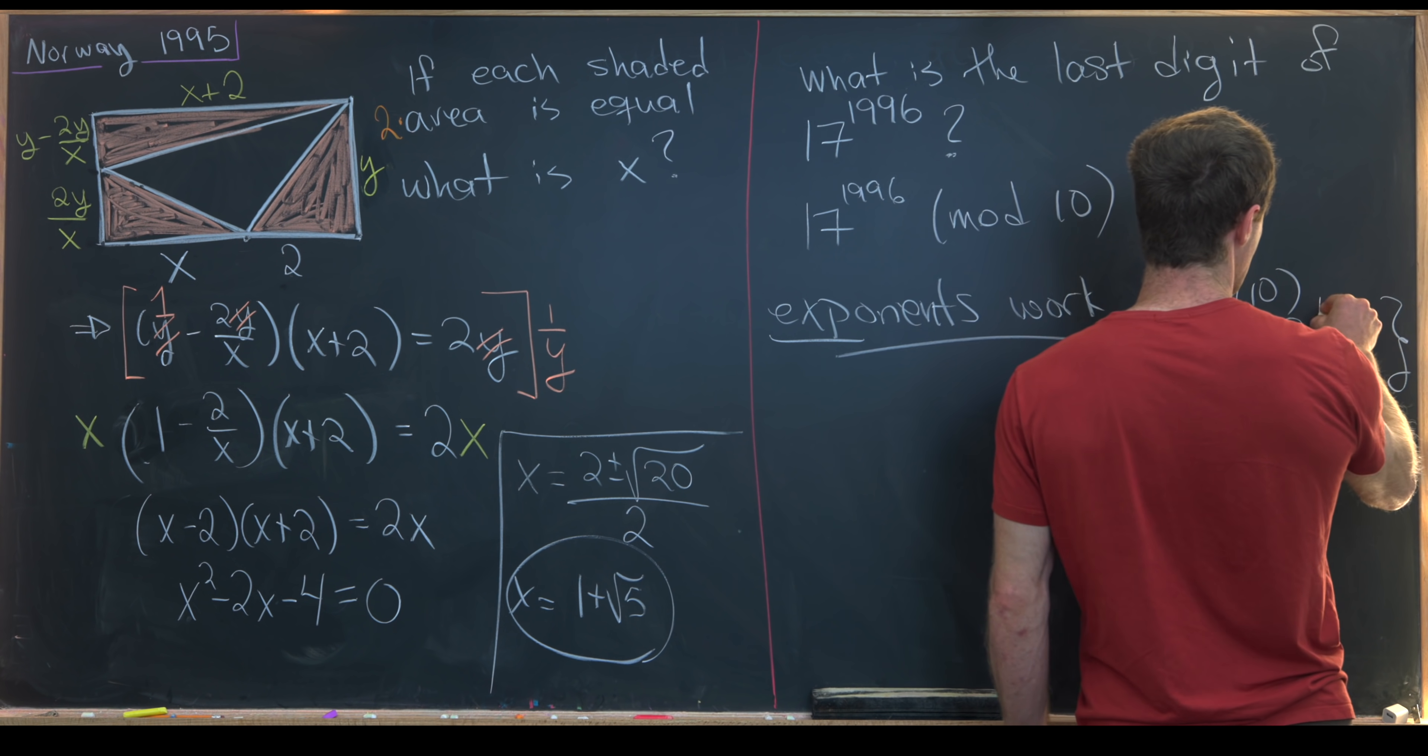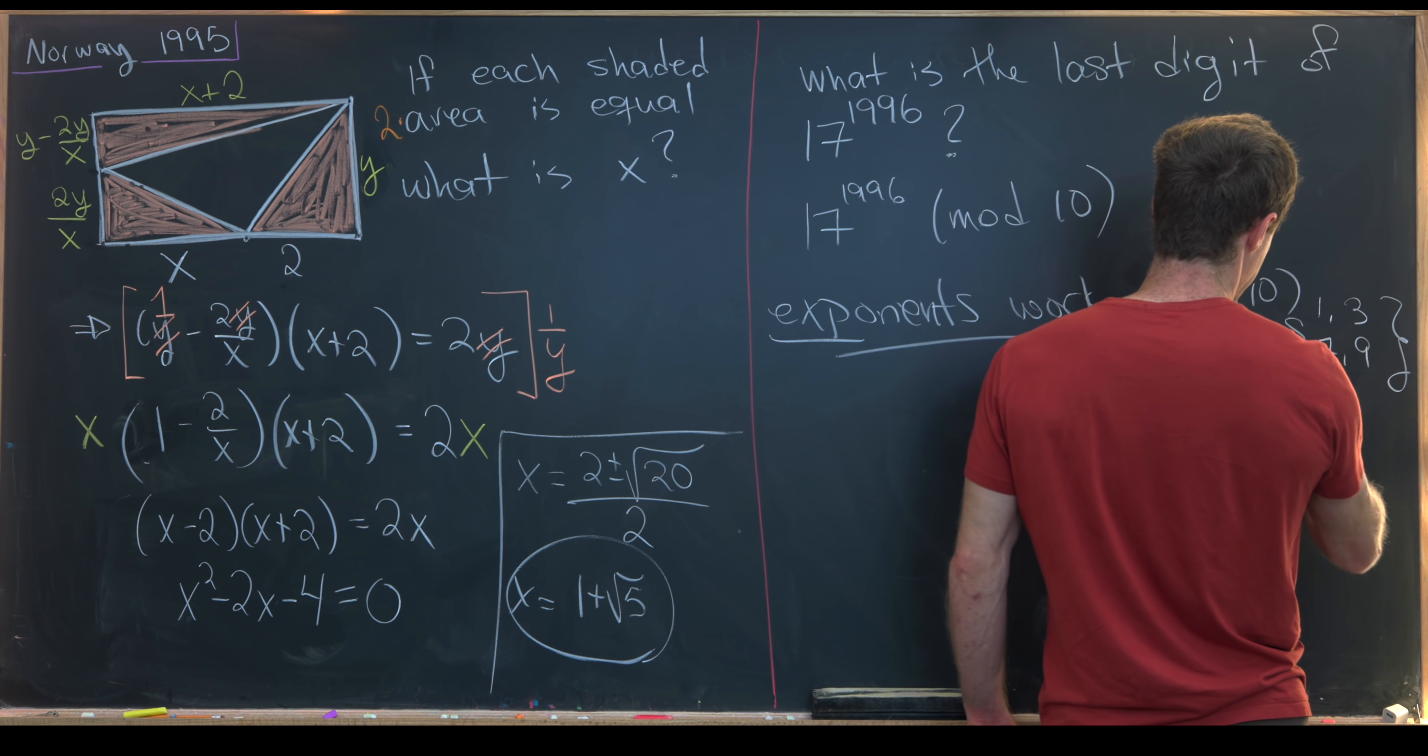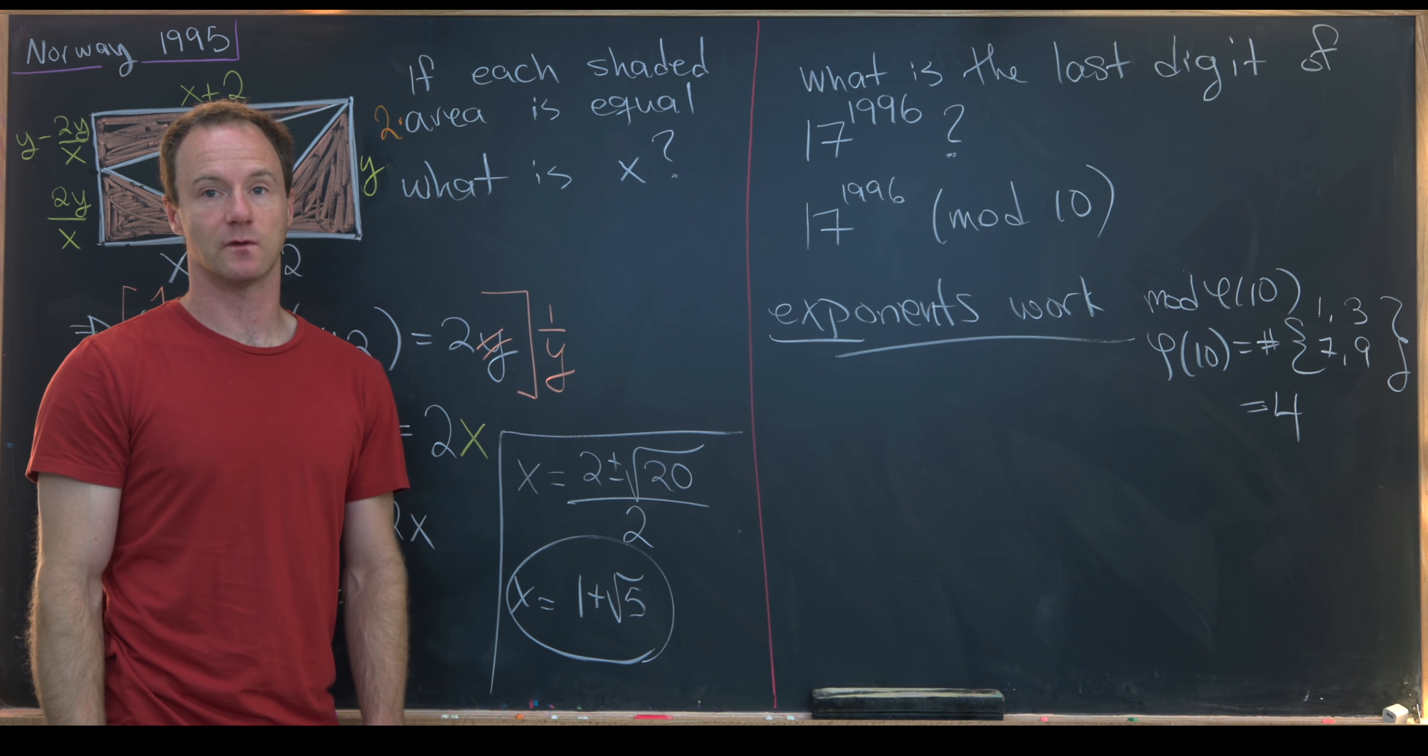It's easy to make a list of that though. We have 1, 3, 7, and 9. So that means that phi of 10 is equal to 4.